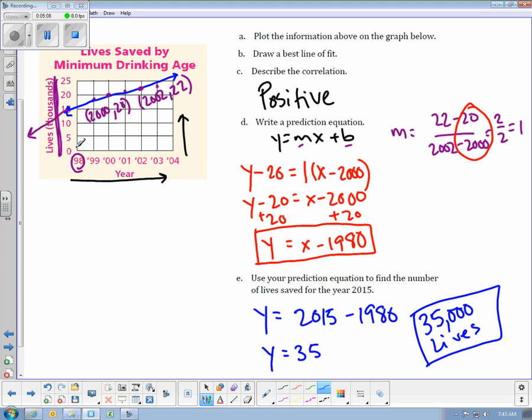So scatterplot, drawing the data, drawing the line of best fit, coming as close to all those points as possible, and then writing the prediction equation from there. Finding the slope, finding the y-intercept, then we can use it to find any year that we want. I could ask you what would be in 3015. You could plug that in as well.